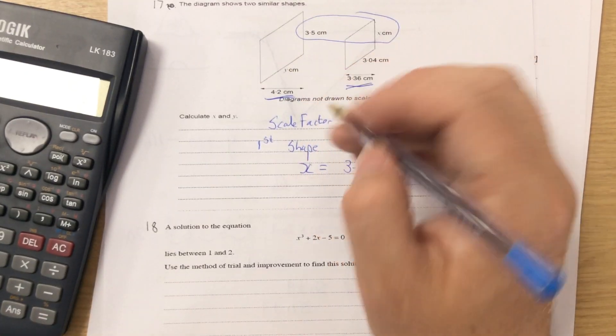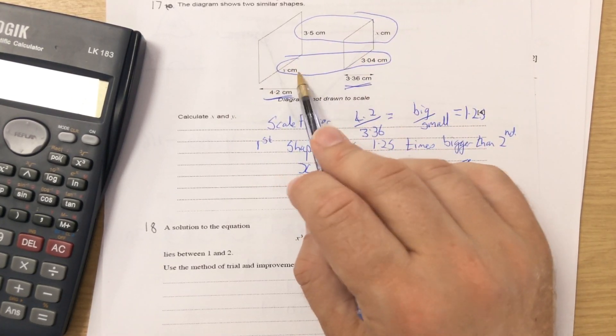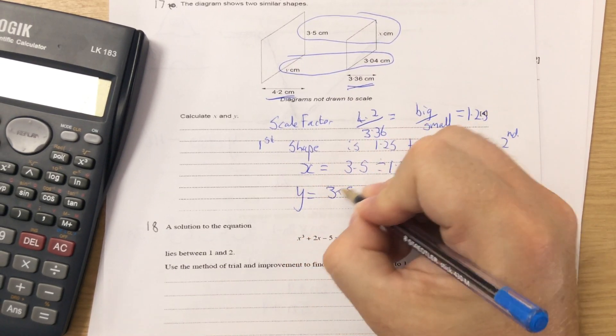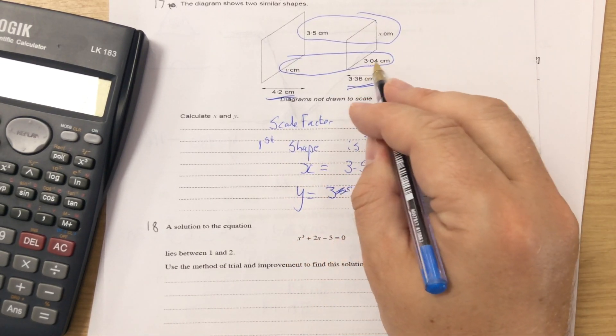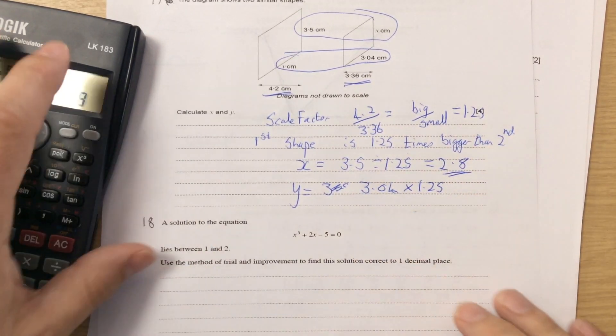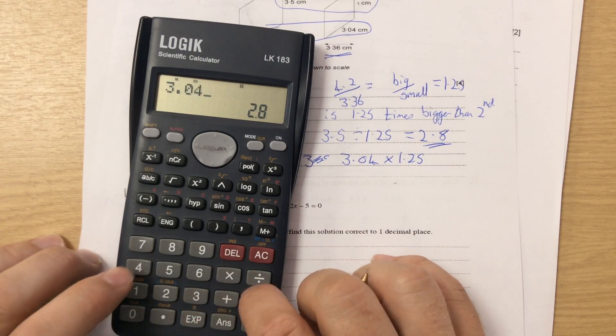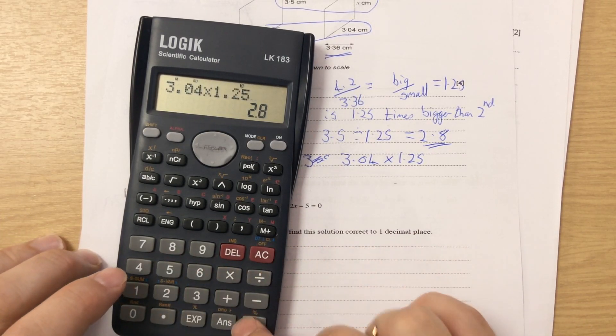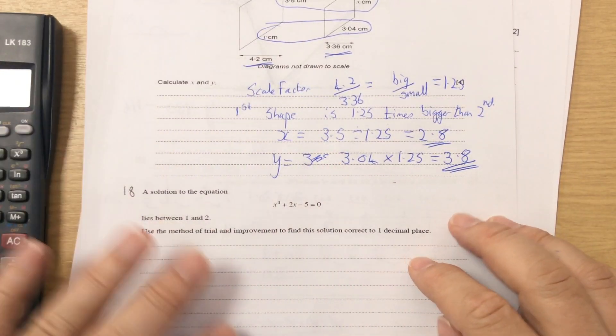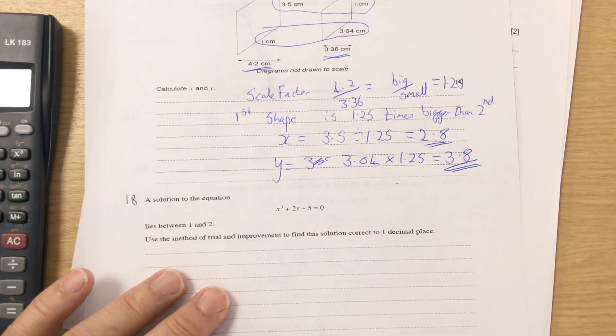And when I'm finding y, y is similar to 3.04. But because y is in the bigger shape, you times by 1.25. So it becomes 3.04 times 1.25. So 3.04 times 1.25 equals 3.8. So x is 2.8 and y is 3.8.